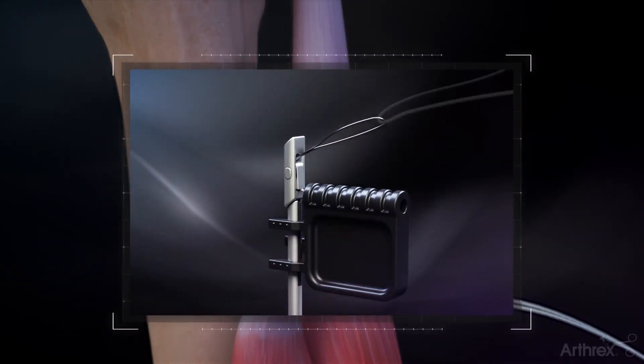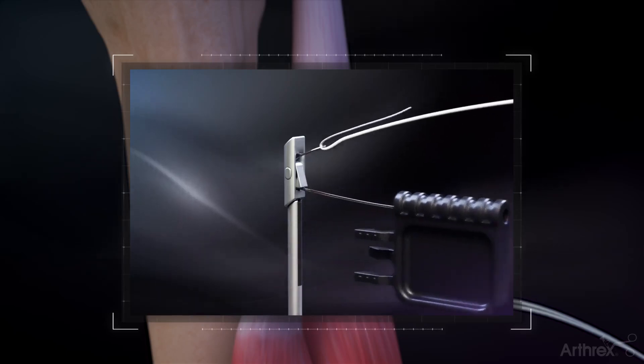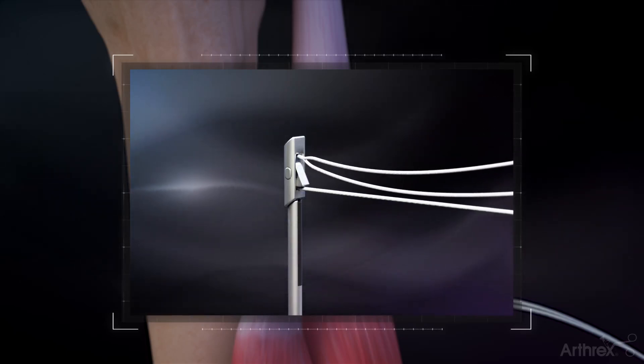Load the tail of the fiber link into the button loader, pull the tab to shuttle the suture through the button, stopping just before the loop enters the locking jaw.